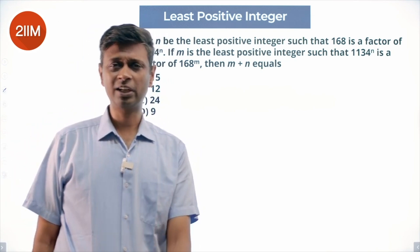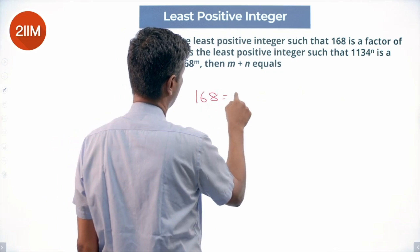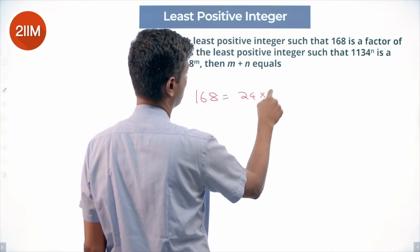At first cut, this looks like a tough question. It is not. Prime factorize 168. I know it is 24 into 7, number of hours in a week, which is 2^3 into 3 into 7.